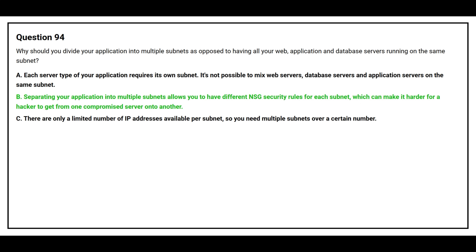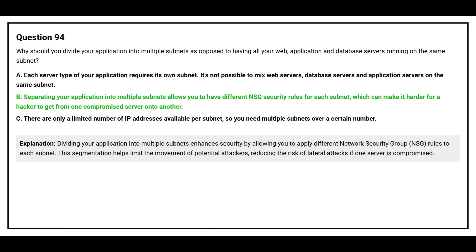The correct answer is Option B: Separating your applications into multiple subnets allows you to have different NSG security rules for each subnet, which can make it harder for a hacker to get from one compromised server onto another. Dividing your application into multiple subnets enhances security by allowing you to apply different Network Security Group (NSG) rules to each subnet. This segmentation helps limit the movement of potential attackers, reducing the risk of lateral attacks if one server is compromised.